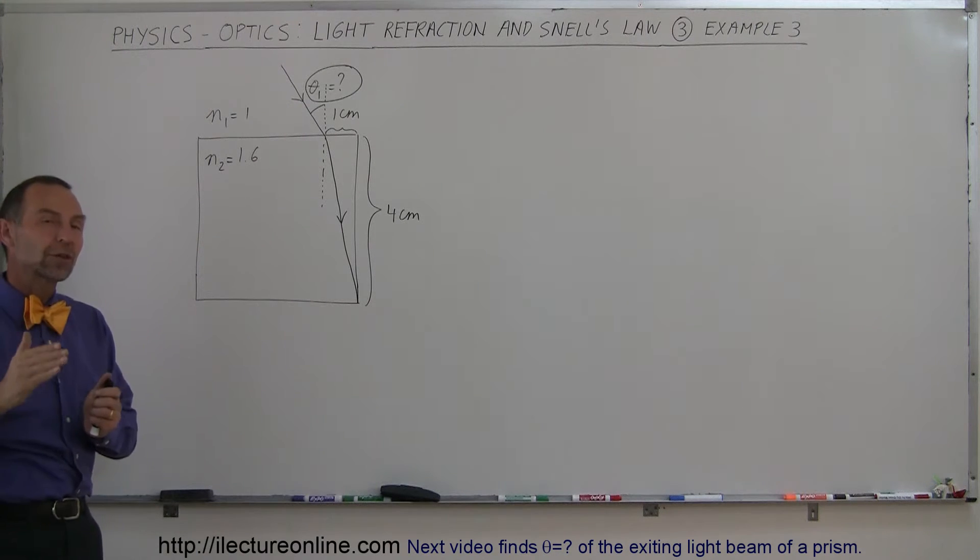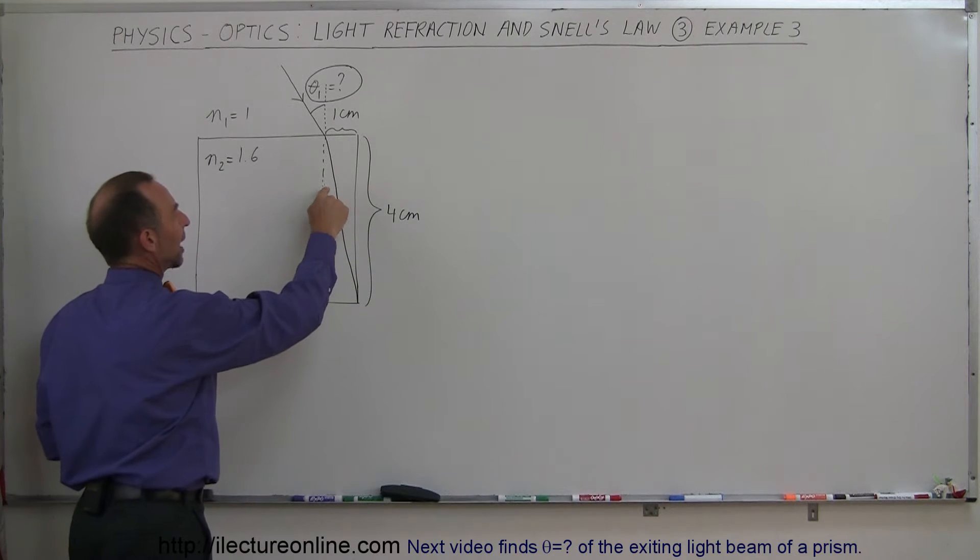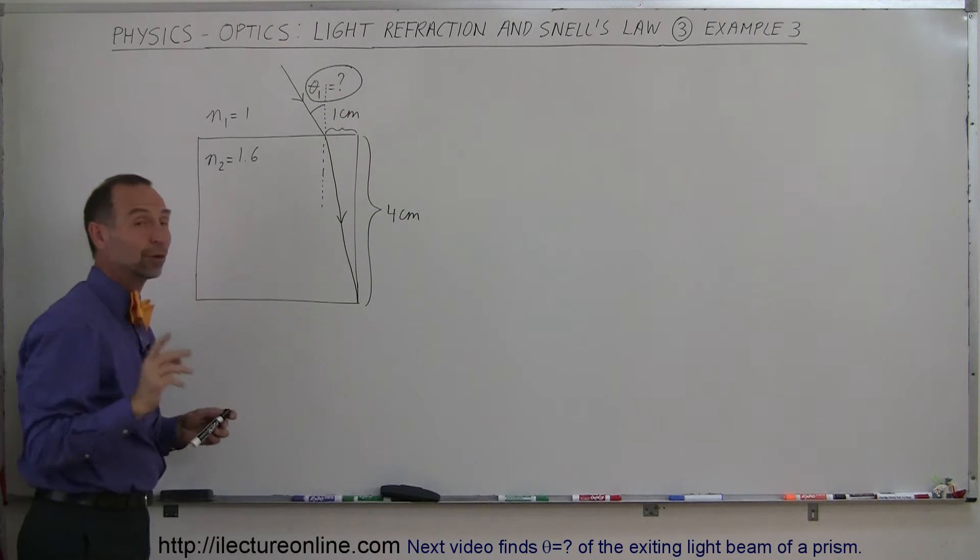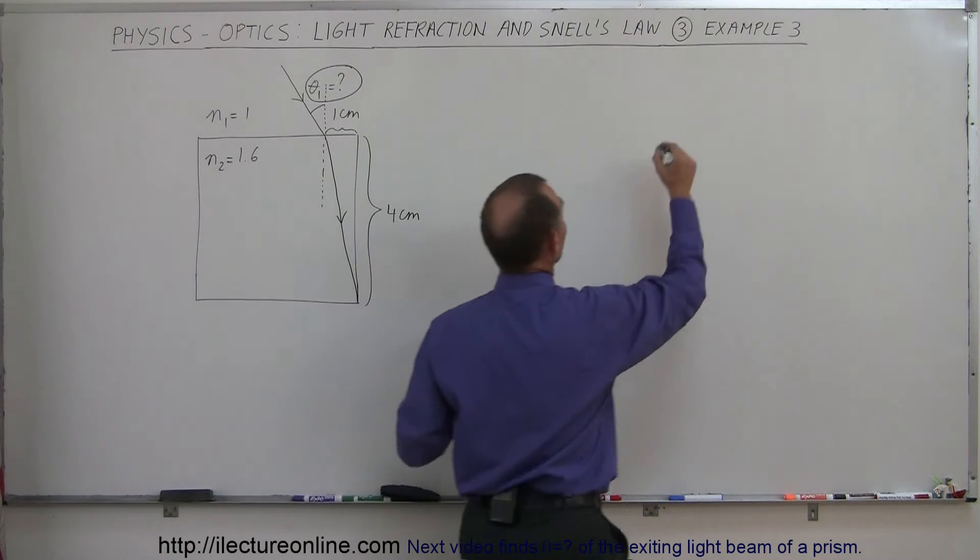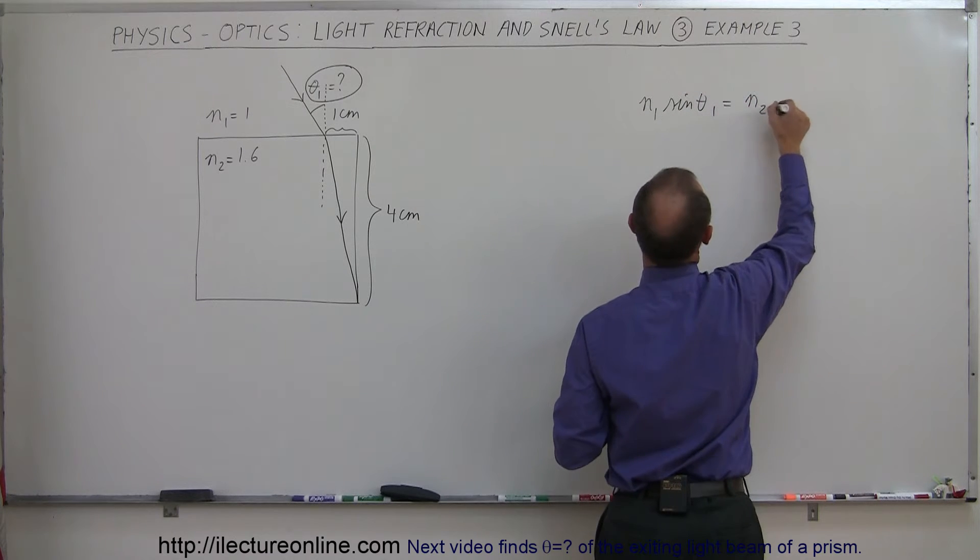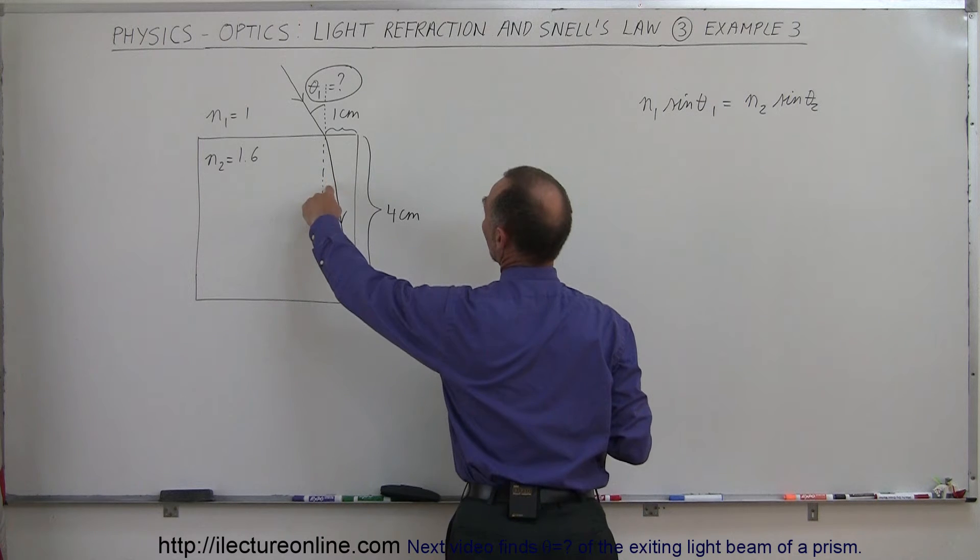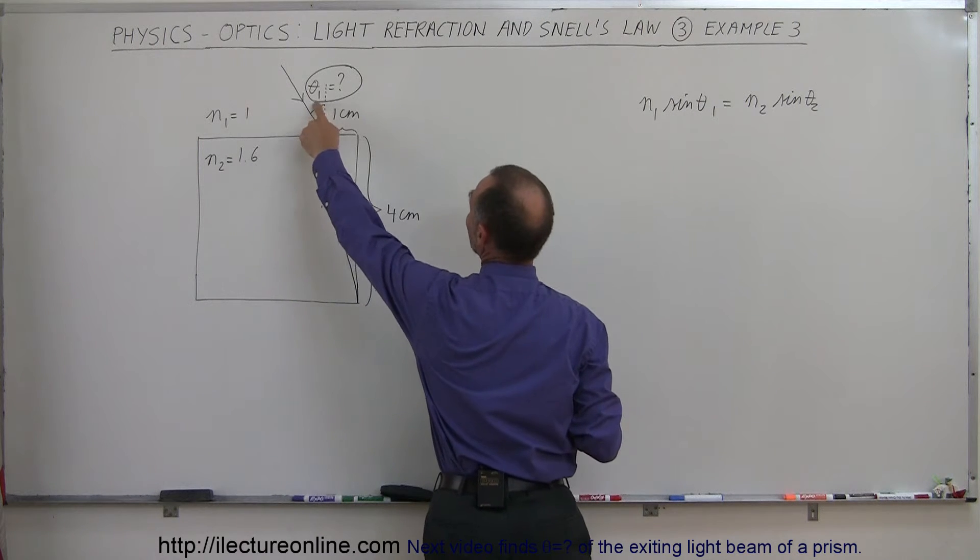Well, the way to do that is to kind of work ourselves backwards. What we're going to do is we're going to figure out what the refracted angle is, and then use Snell's Law to figure out what the incident angle is. Because we know using Snell's Law that n1 sine of theta1 equals n2 times the sine of theta2. So theta2 would be the refracted beam, theta1 would be the incident beam.